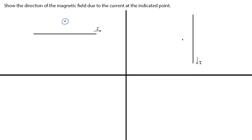In the second example, we have a current going down. Again looking at the direction of the magnetic field at the point and using the right-hand rule, we have the magnetic field going into the screen at that point. We use a cross to show the magnetic field going into the screen.